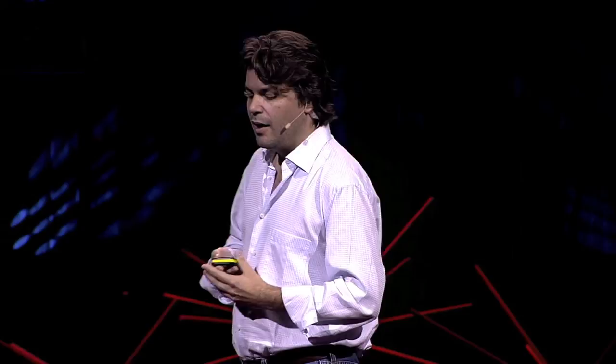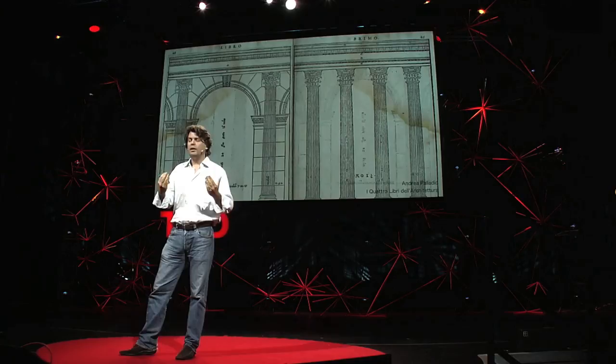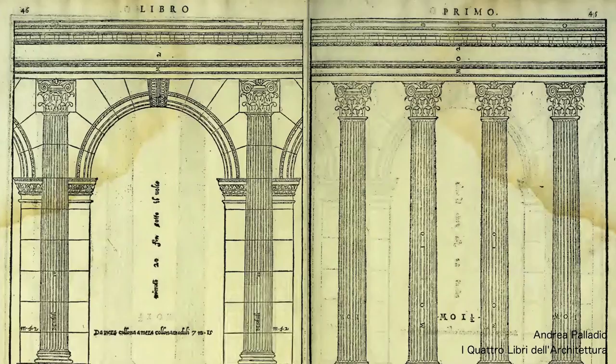Let's bring this process to architecture. How, and at what scale? I chose to design a column. Columns are architectural archetypes. They've been used throughout history to express ideals about beauty and about technology. The challenge to me was how we could express this new algorithmic order in a column.